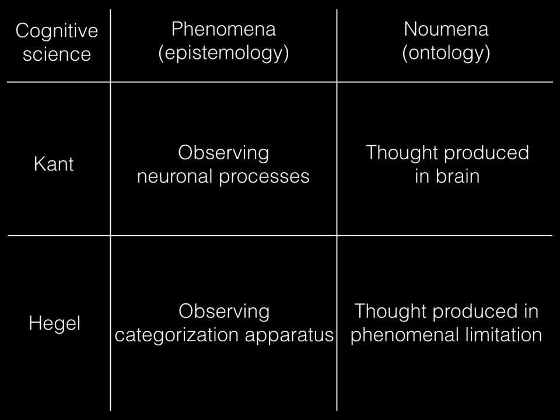In these schemes, we get claims of correlationism between a certain neuronal mechanism and a certain subjective experience, and the view that, with the relentless march of cognitive science, we will eventually have a total understanding of thought produced by the brain. However, this is totally untenable in a Hegelian ontology, since one can never get at the in-itself of thought by studying neuronal processes. For Hegel, the appearances are all we have, and the real location of thought is in the observing categorization apparatus itself—in the very transcendental apperception of the neuroscientists observing the brain matter.